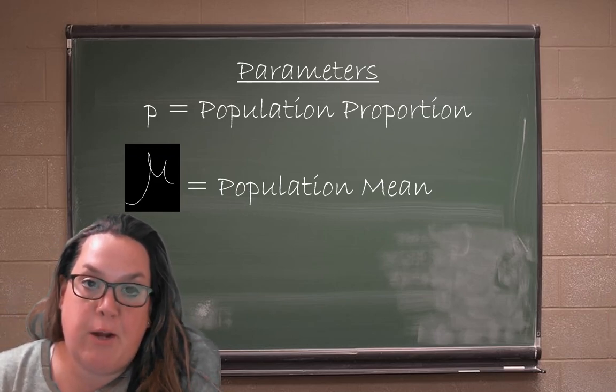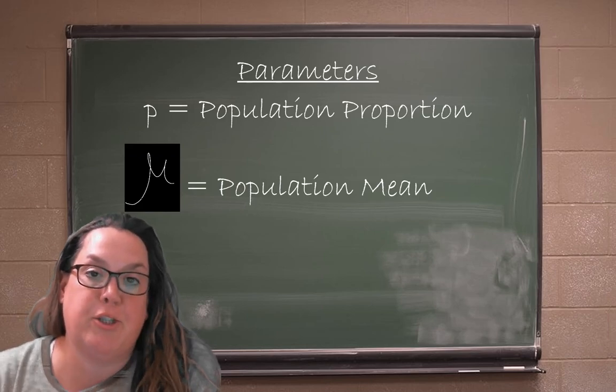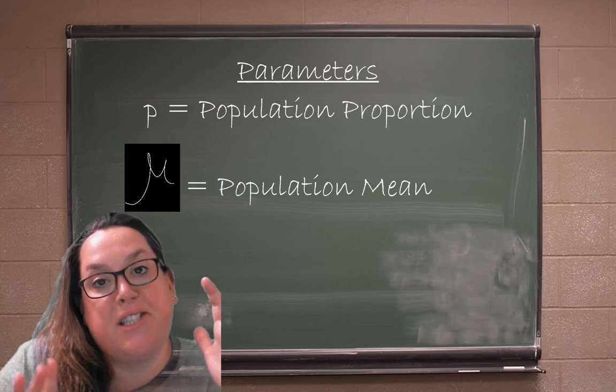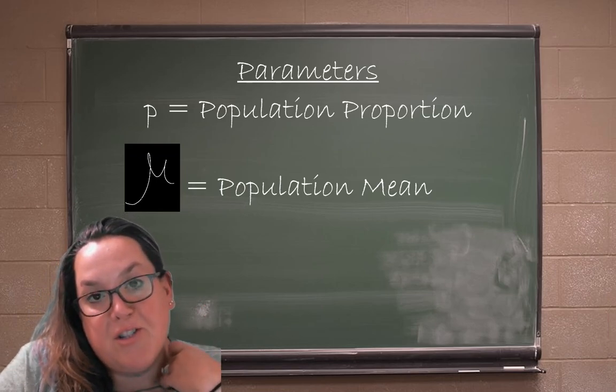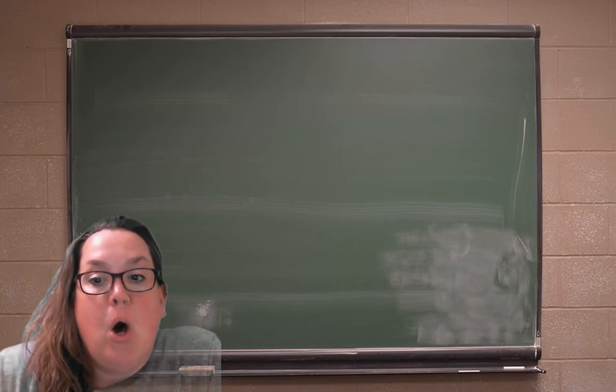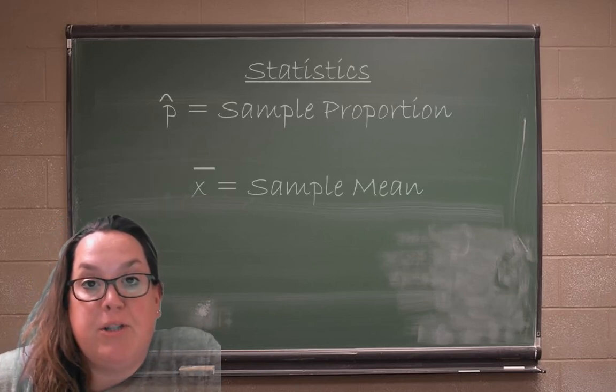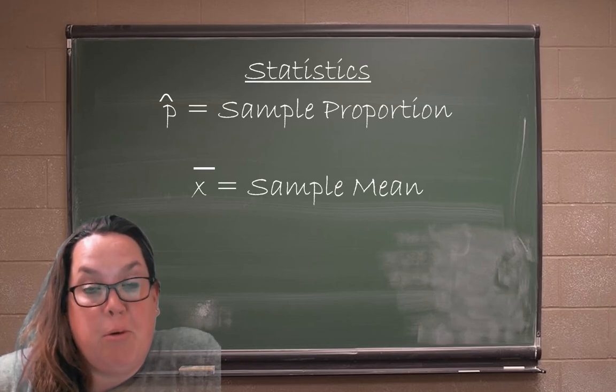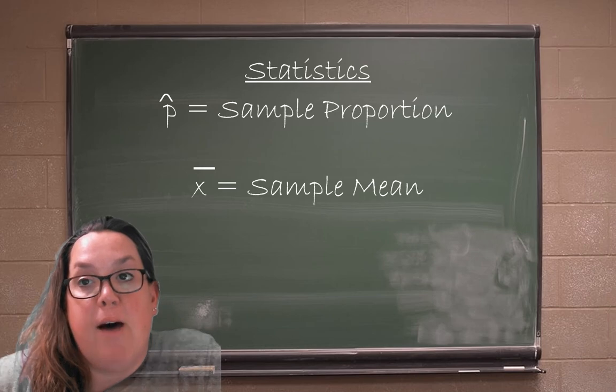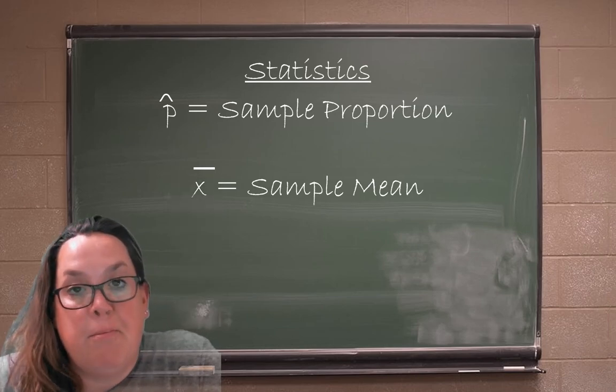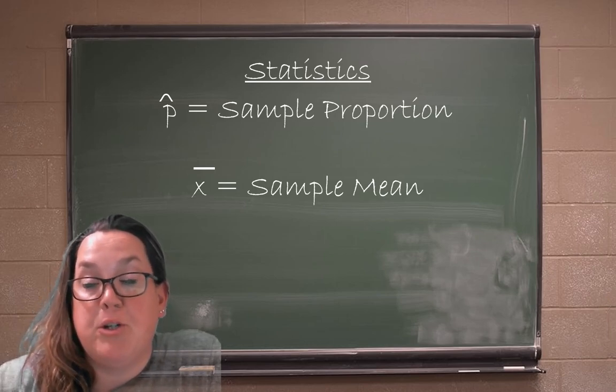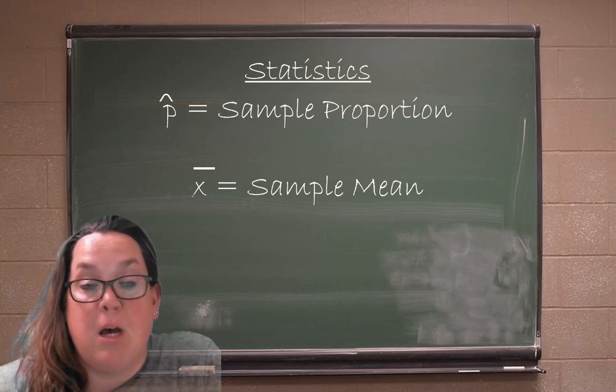They're both parameters because they both refer to a population. Now we are going to use their sample estimates or statistics that correspond to them to estimate those parameters. So we had p-hat, which is the sample proportion that will be used to estimate p, and then we have x-bar, which is the sample mean that corresponds to μ. So we will be trying to use x-bar to estimate μ.